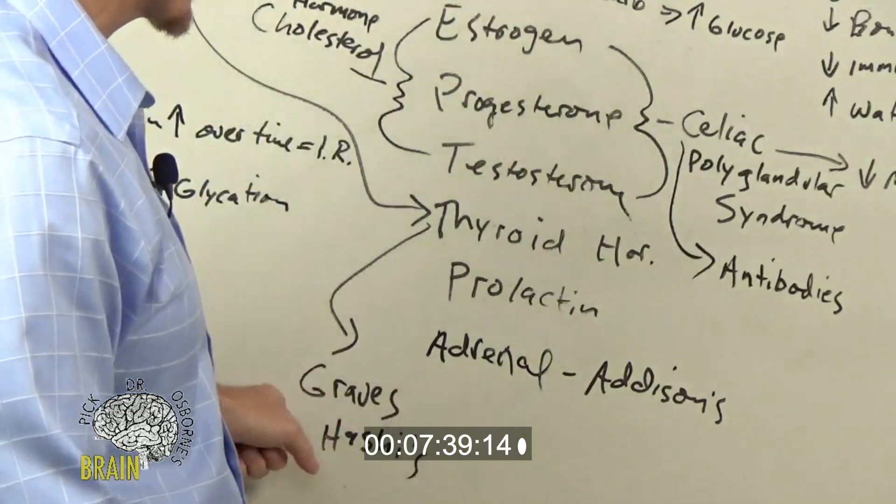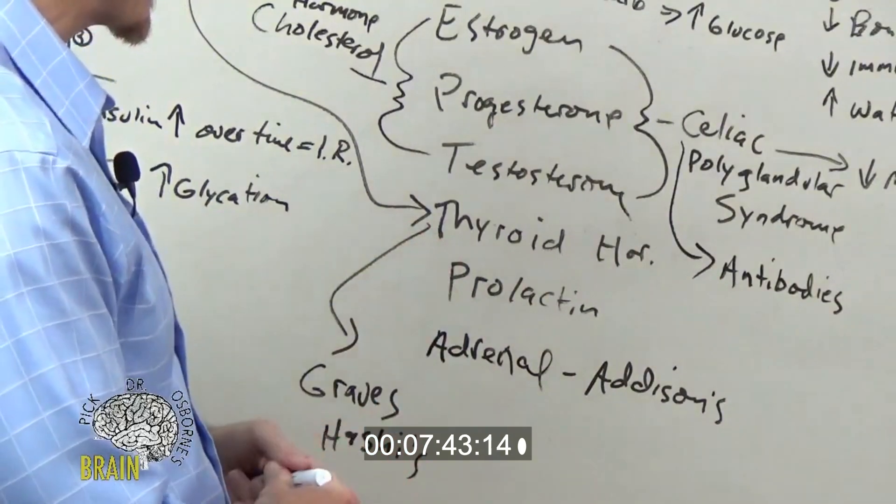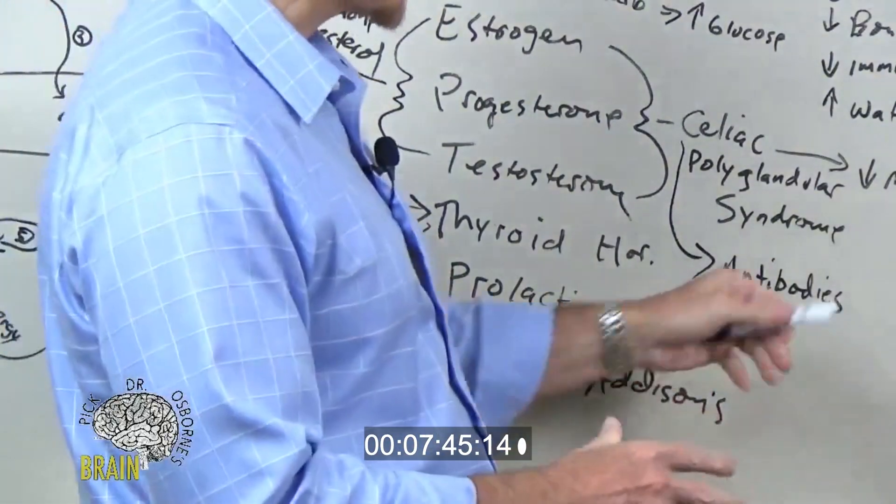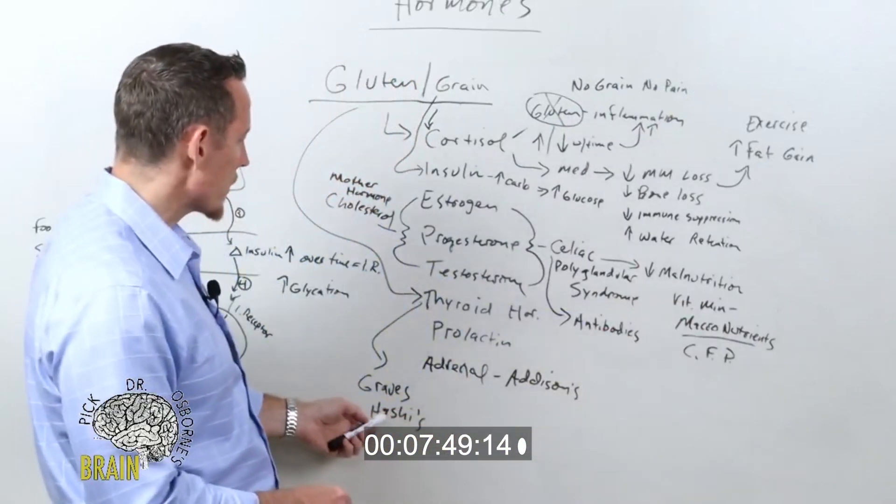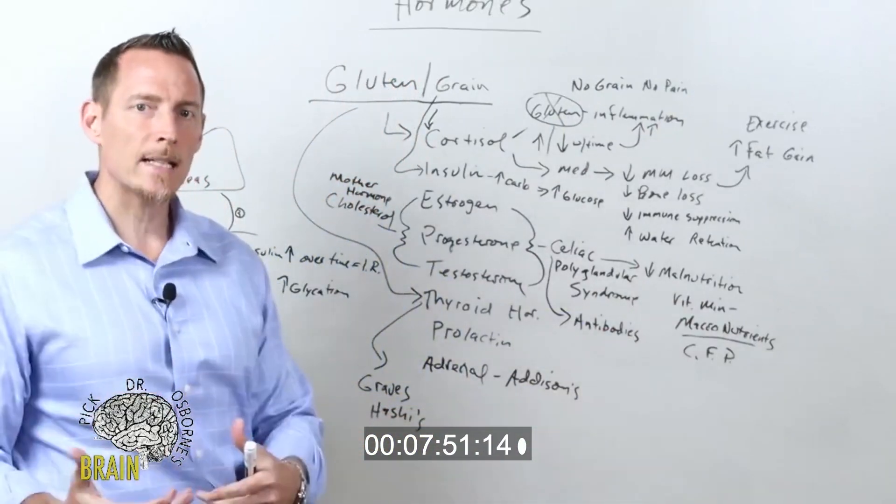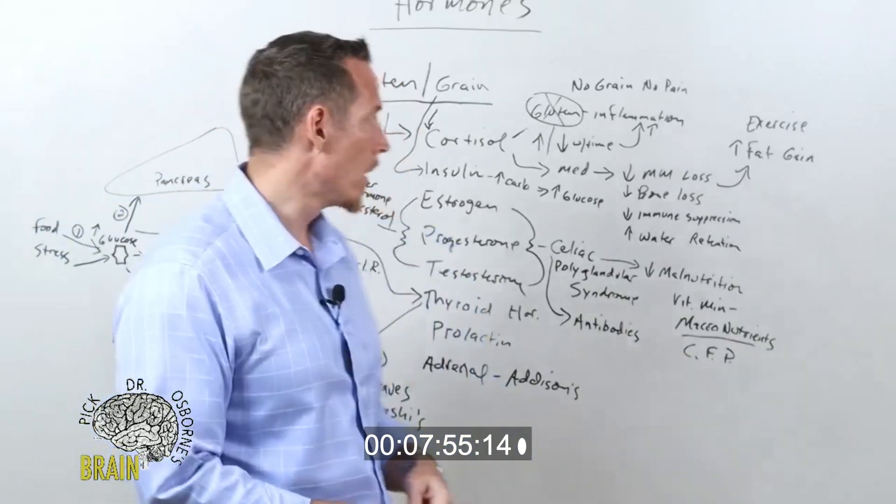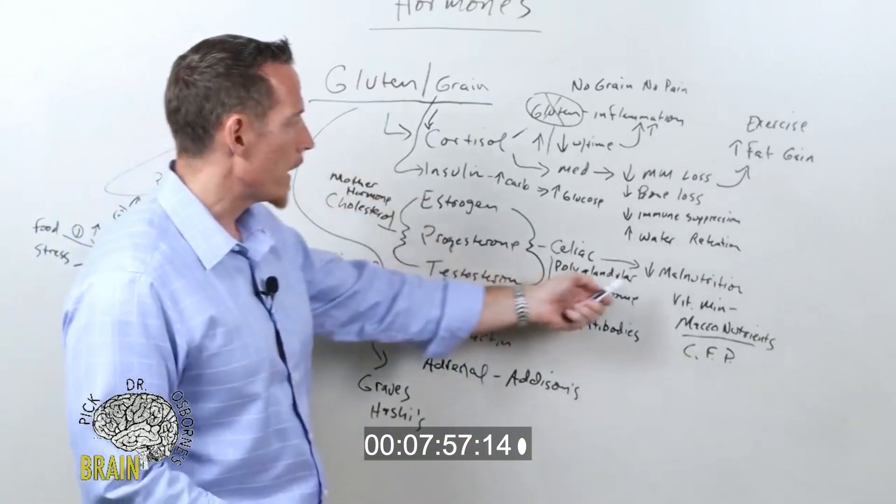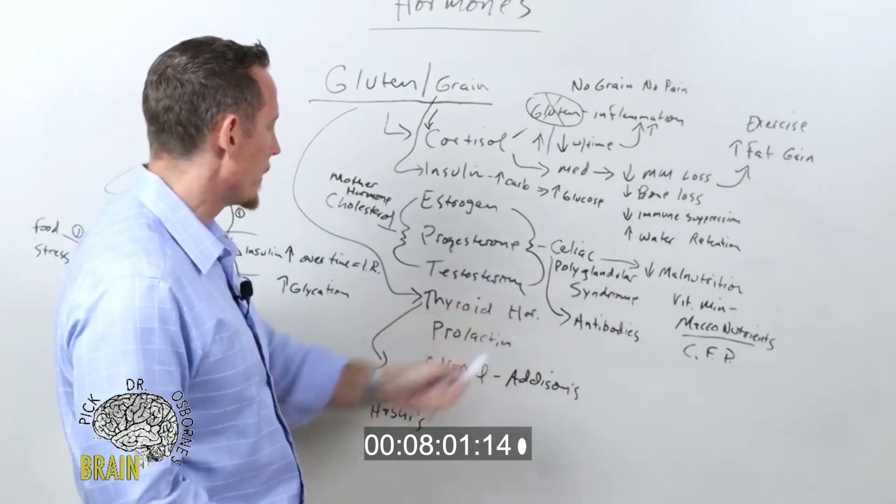Can both be consequences of a gluten-induced thyroid dysfunction. But again, we also know that there are about 17 different vitamins and minerals and proteins that are necessary to produce and regulate how thyroid hormones work and interact with your DNA. And so gluten and grain-induced malnutrition, as well as autoimmune processes, can affect the thyroid.